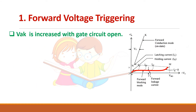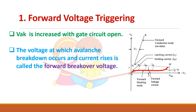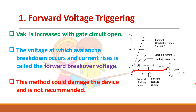In this method, the anode voltage is increased with the gate circuit open. We are increasing the voltage continuously and at one voltage we can see breakdown occurs and the current starts to increase. This voltage at which breakdown occurs is called the forward break-over voltage. This method is not recommended because it may damage the SCR.